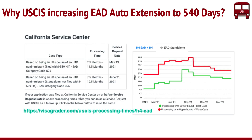One other important thing we want to cover is the data from H4 EADs, which is one of our data points for our key audience — H4 EADs and L2 EADs. If you see the processing times for H4 EADs and L2 EADs, it's no different. It's also anywhere from 7.5 to 10 months, as tracked on VisaGrader. So these are standalone EADs, and you can see how it's been fluctuating in the last few months.